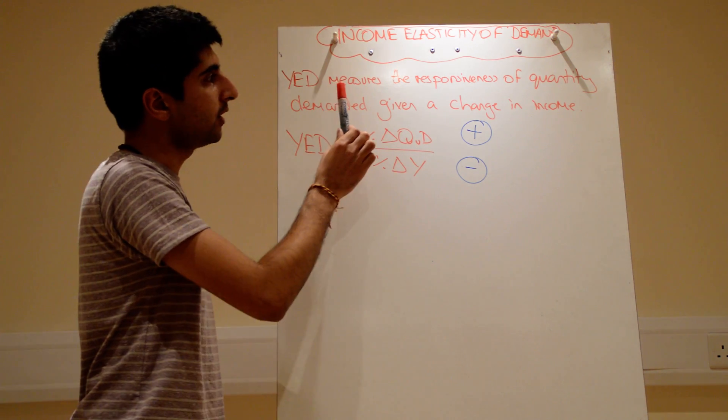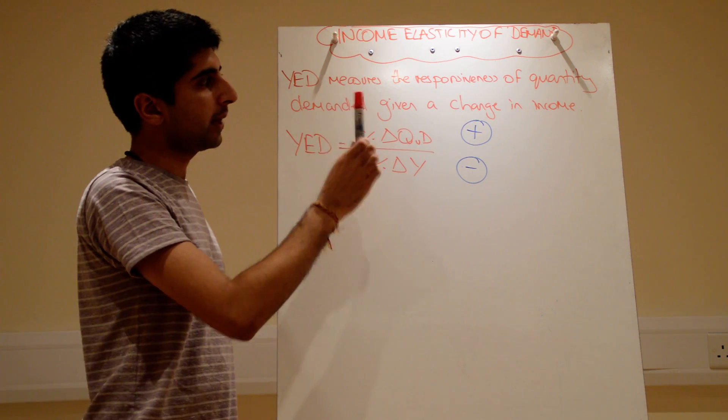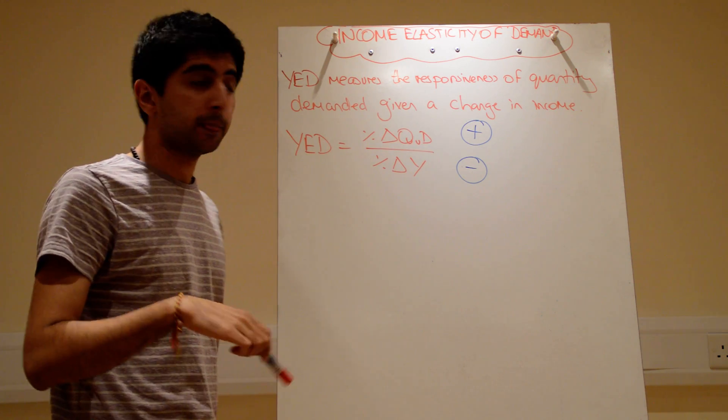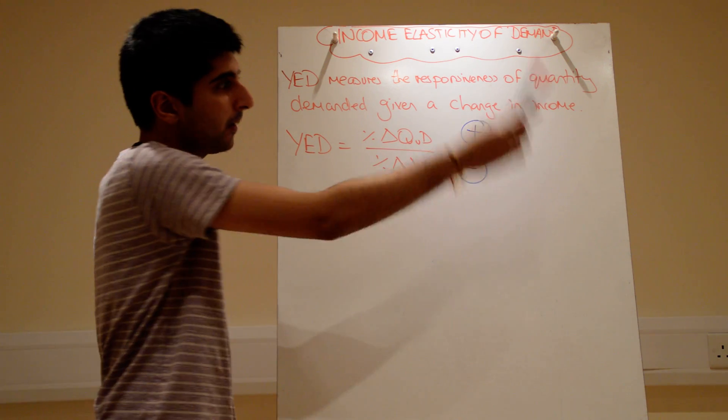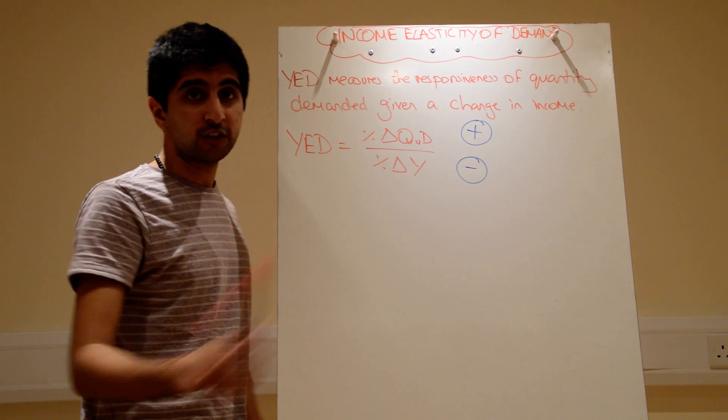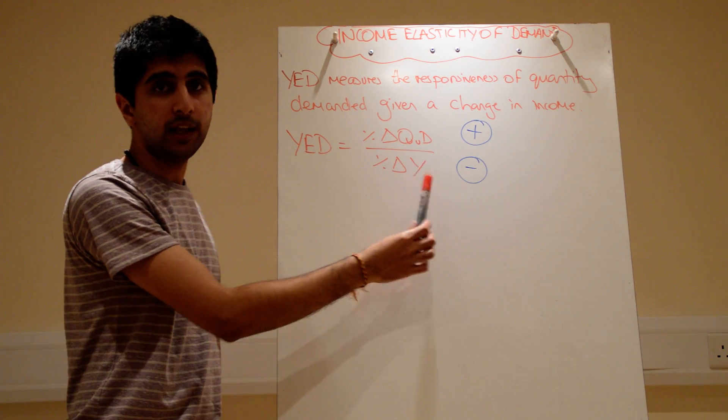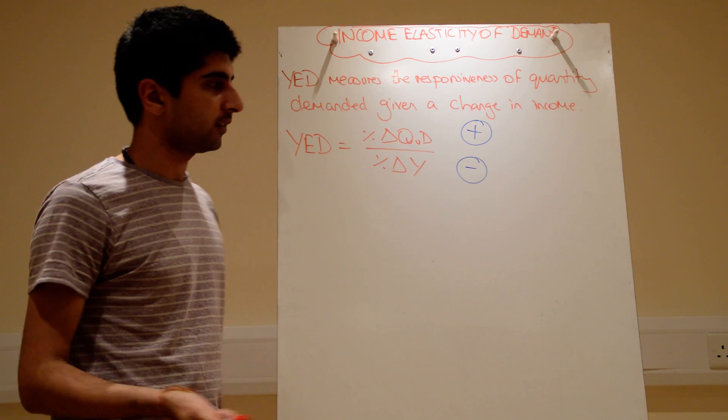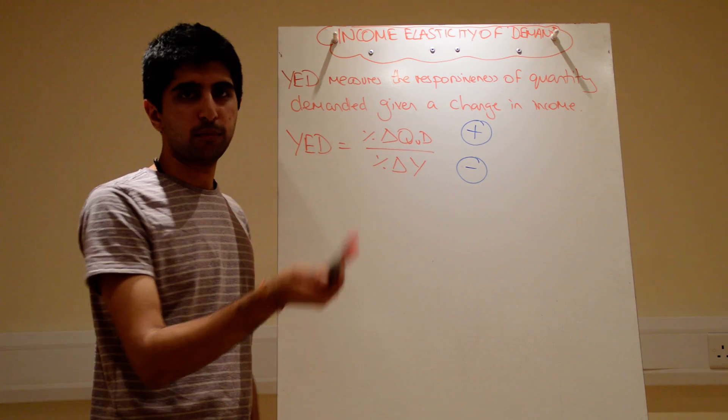So YED measures the responsiveness of quantity demanded given a change in income. So we're not looking at price, don't get confused now. Price is gone, I'm looking at income. The equation is just like before, but now we just have Y, income at the bottom, instead of price. The percentage change in quantity demanded over the percentage change in price.